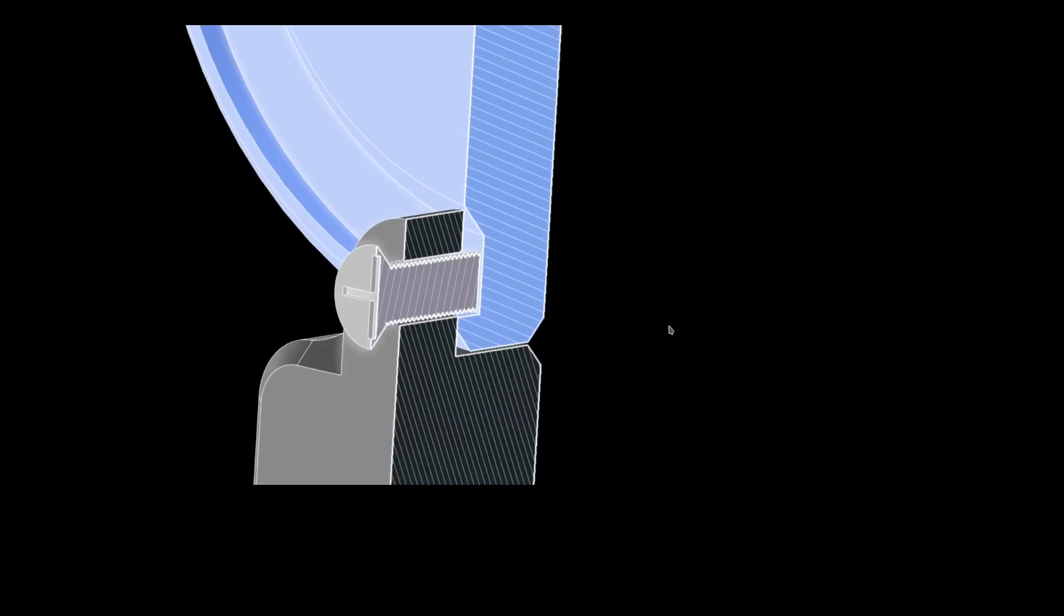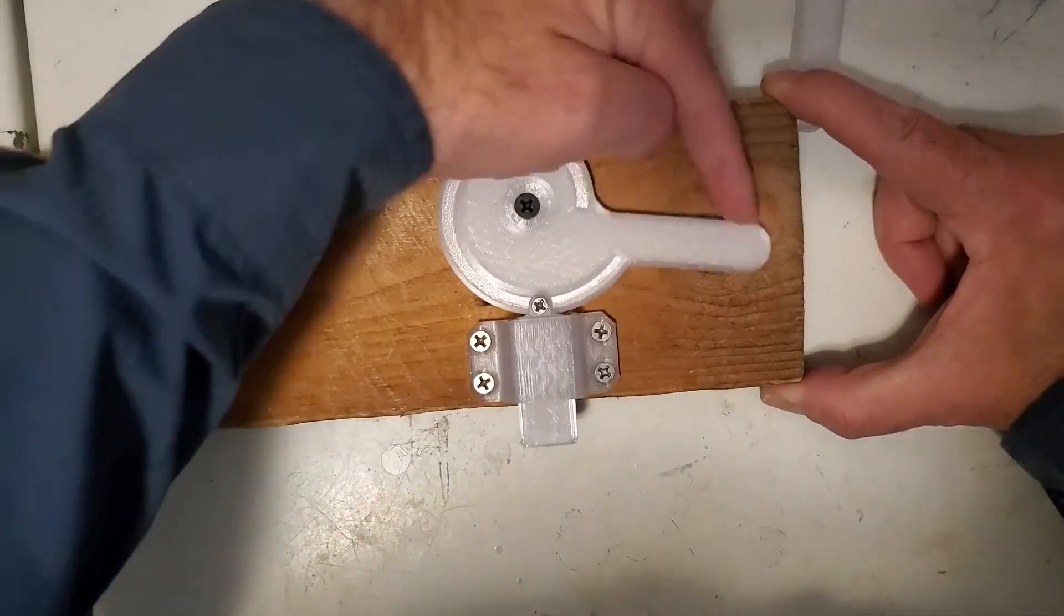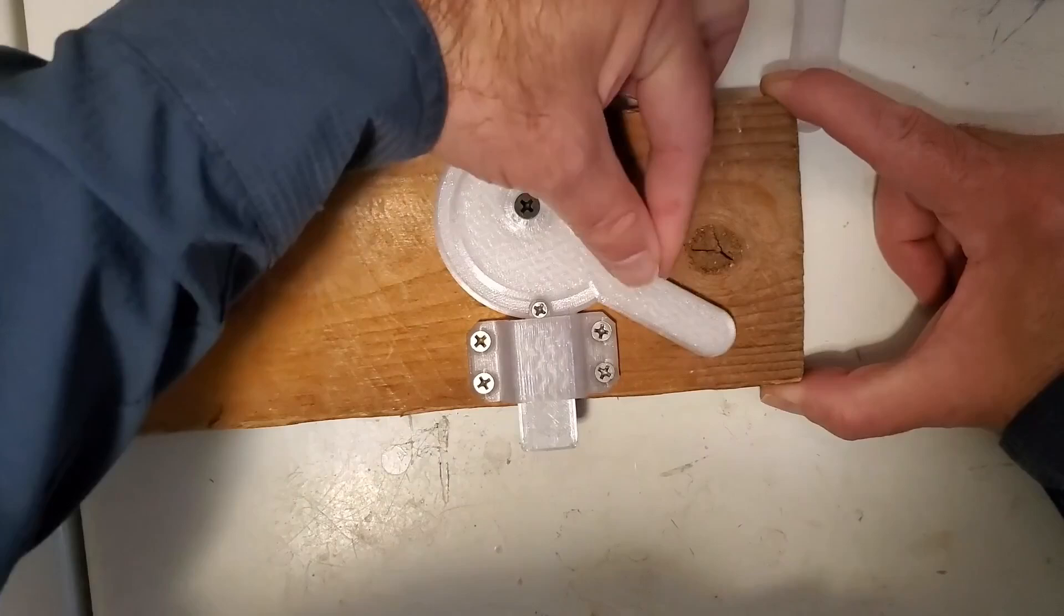As you can see here in this section view, the screw runs in a shallow groove. When you're actuating downward the screw doesn't bear any load. The load is transferred through the rim of the spiral.